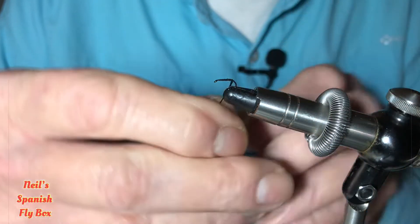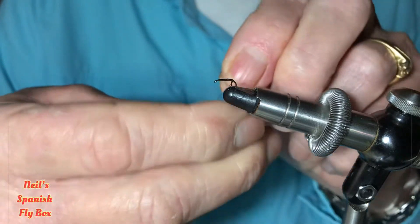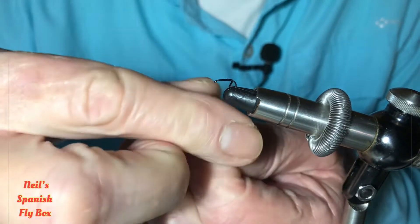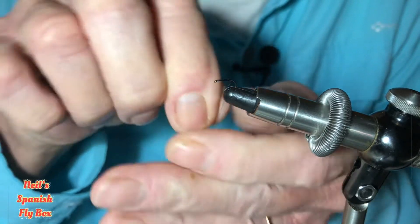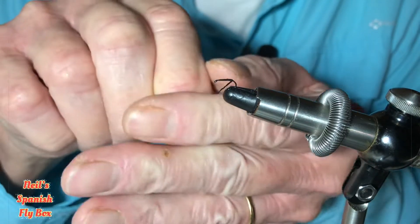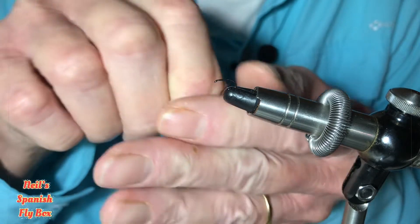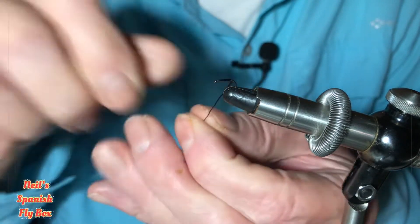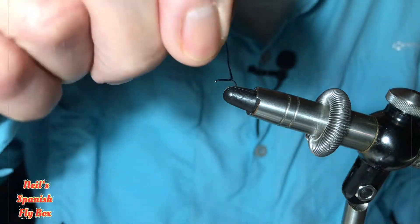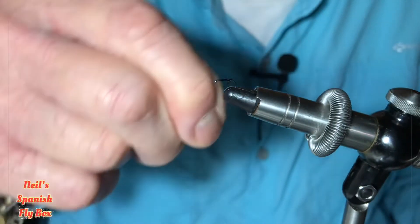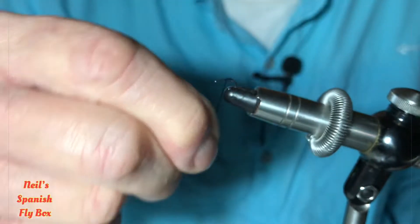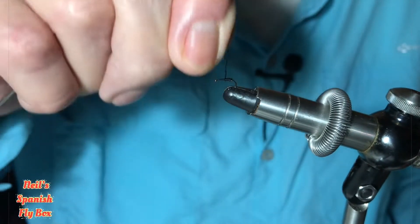Now I'm going to twist this fiber around the thread to give it a bit of extra strength when we're tying it. We don't get many wraps because this is a size 20 dry fly hook in the vice.